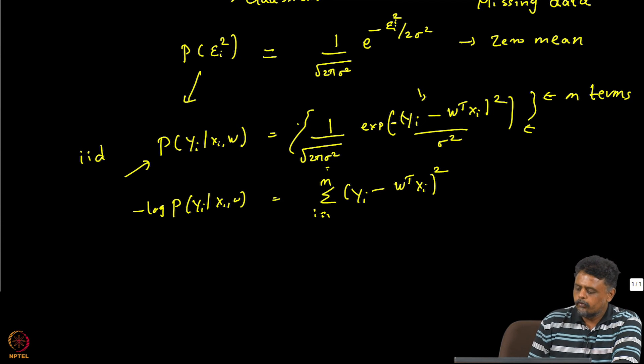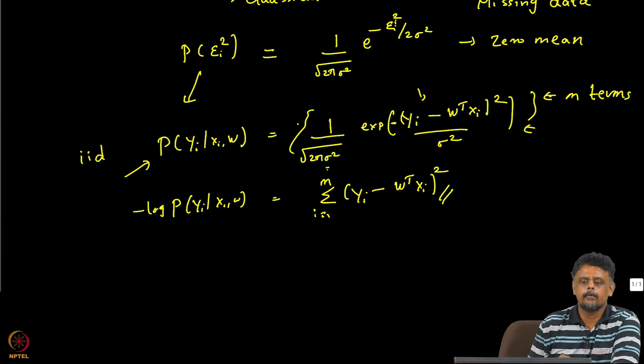So if you actually calculate the probability of the entire data set, it is a product over this, each of the data points. So if we take the log of this, you would get a summation. We see this is our least squares cost function.